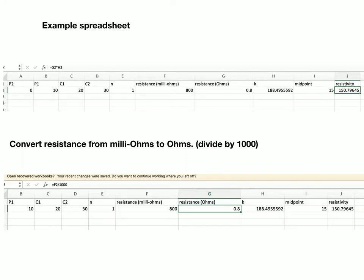Right, to convert, or to do the resistance to resistivity calculation, we first have to convert from milliohms to ohms. So generally, we do this by dividing by 1,000.